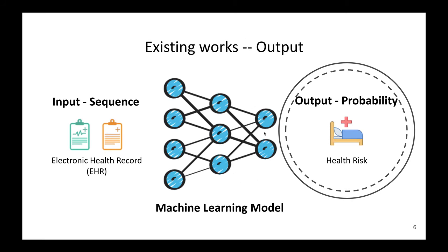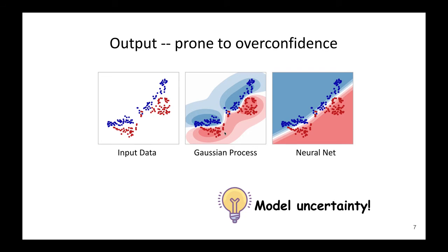From an output perspective, existing machine learning models usually only output a probability score, which are prone to be overconfident. For example, suppose there's a binary classification task. On the first figure we have the input data. The neural network cannot model the distribution of the input data, so it cannot give uncertainty scores for each prediction. On the contrary, Gaussian process, a probabilistic model, can model the input data distribution. This is especially useful in the clinical domain, where model reliability is of crucial importance. The uncertainty estimation can help detect patients whose predictions are quite uncertain. So in our work, we aim to model the uncertainty along with the prediction labels.